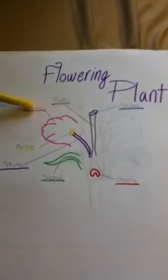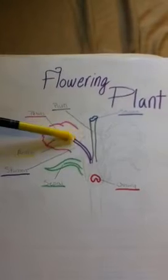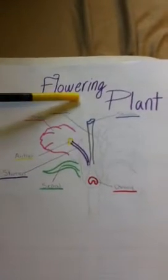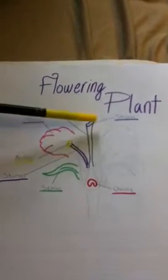So in order for this to happen, generally, these petals over here will attract the animals, such as the bees, which come, take some of this pollen, carry it to another plant, and drop it over here in the stigma, and that is pollination.